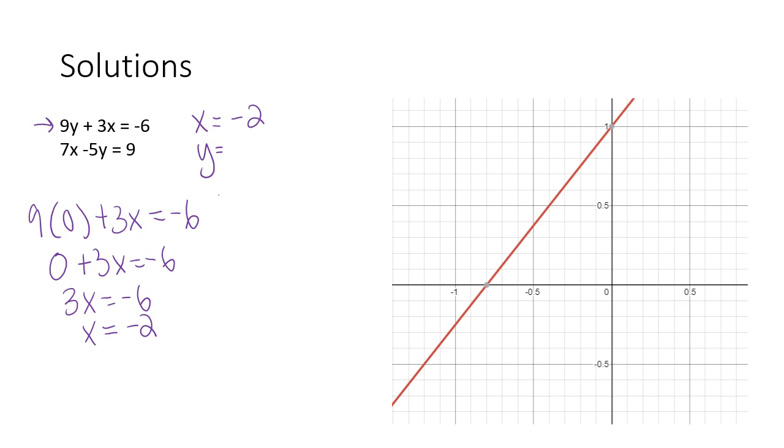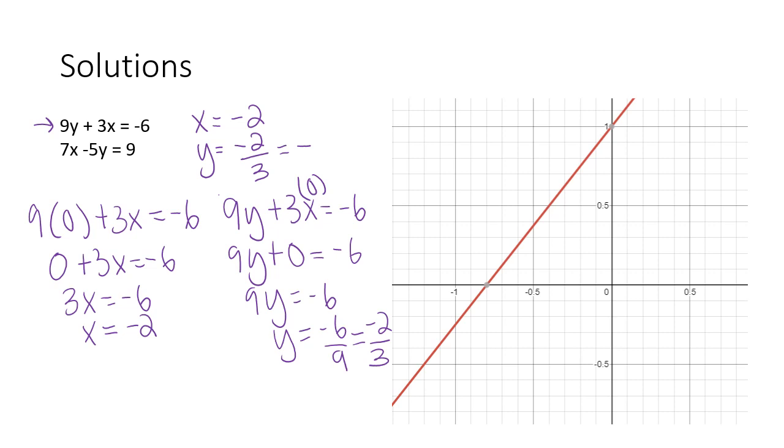And then if I want to solve for the y-intercept, now I have to plug in zero for x because I want the y. So you can write it as negative 2 over 3 or negative 0.6 repeating. It's the same answer.